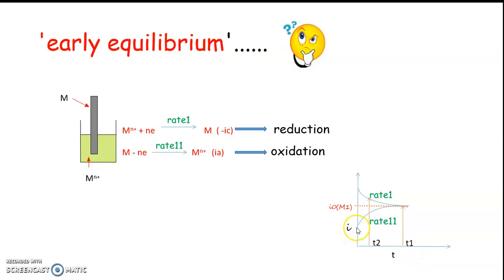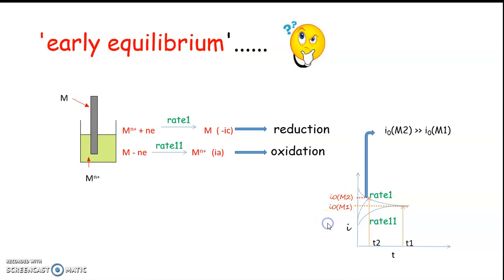When using platinum, or a metal which can produce early equilibrium, the equilibrium attains much faster — you can see that as the cathodic reaction starts, we get an exchange current density higher than for metal one. This happens for platinum compared with other metals, which is why we use platinum in the standard hydrogen electrode. That difference in achieving early equilibrium makes it the best metal.